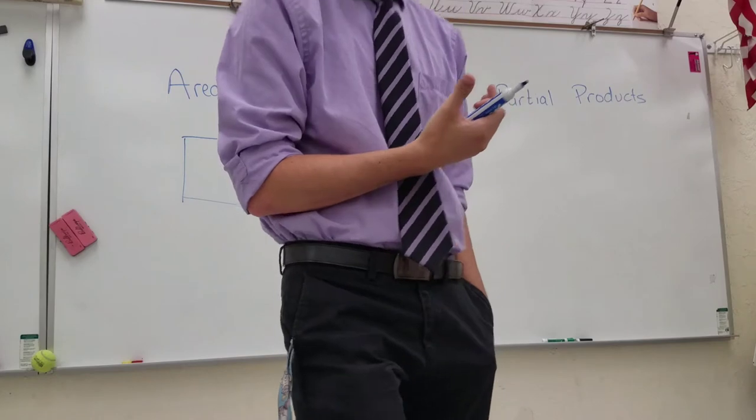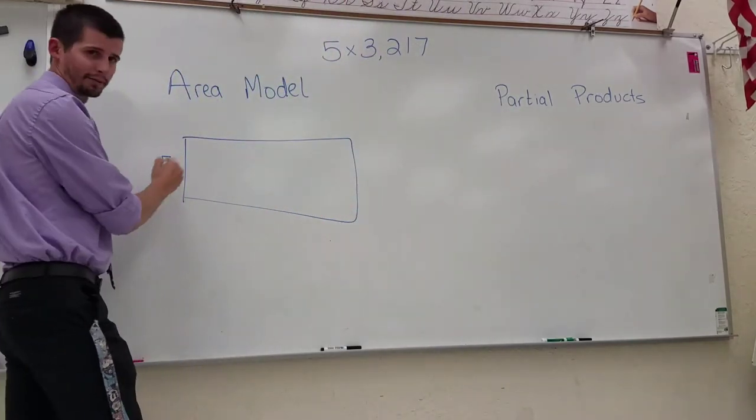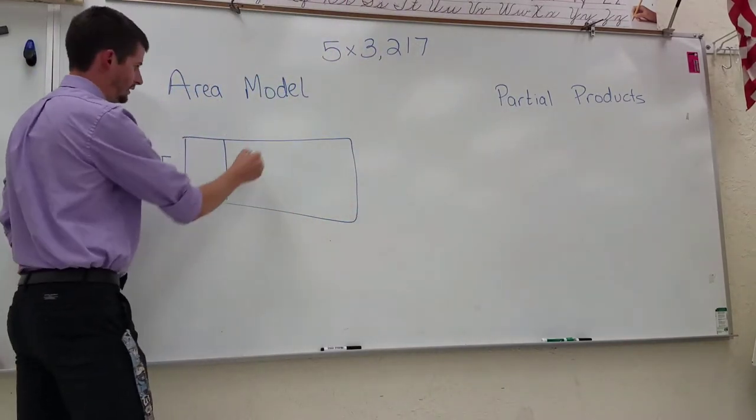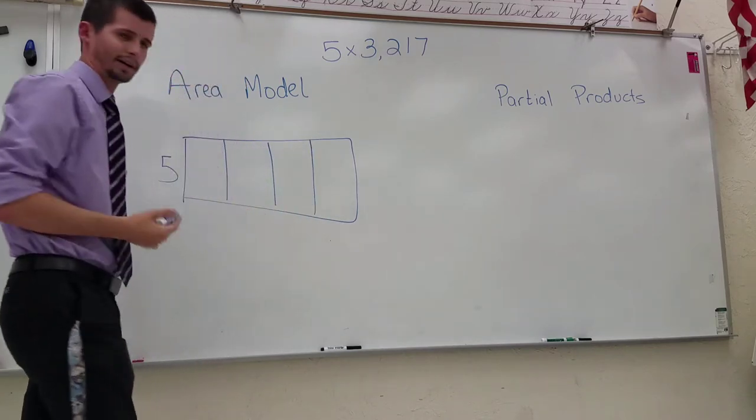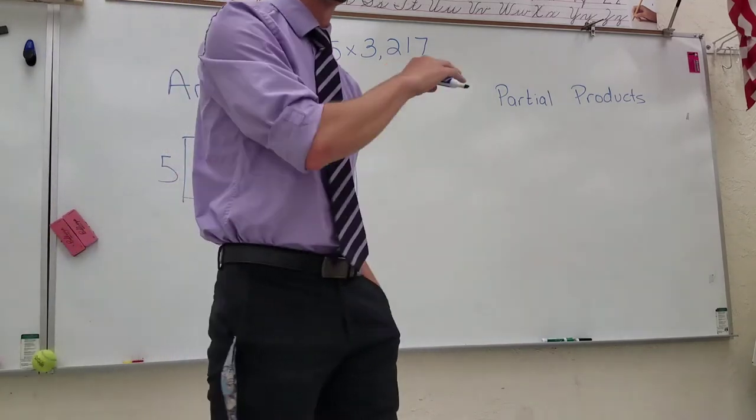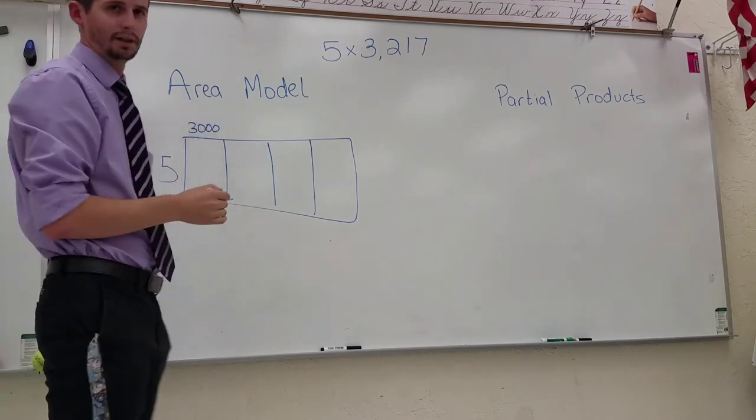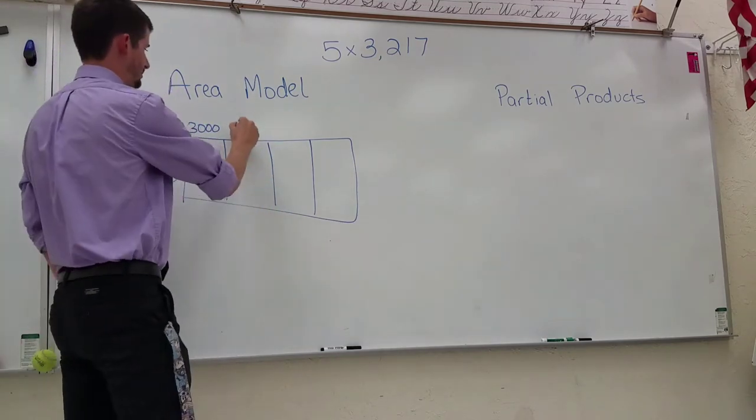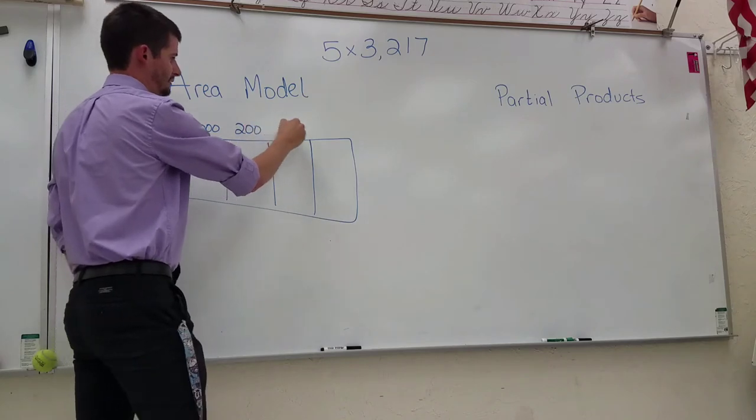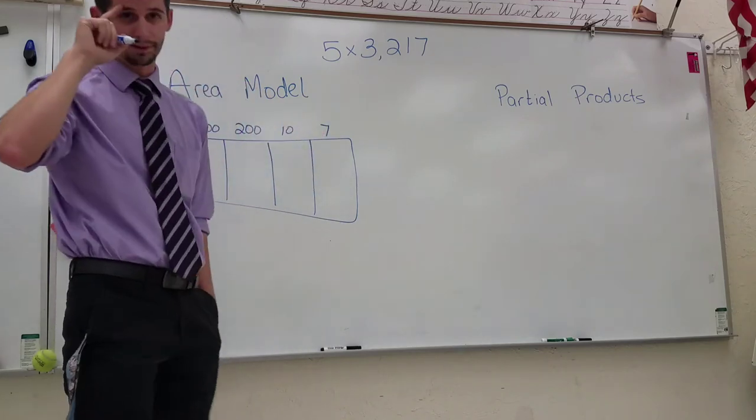When we're starting with the area model we always start with a rectangle and our first factor is going to go on the outside. This time we're going to split our area model into four sections because we have a four digit number. So I'm going to have 3,000 in the first column, 200 in the second, 10, and 7 finishing it off.